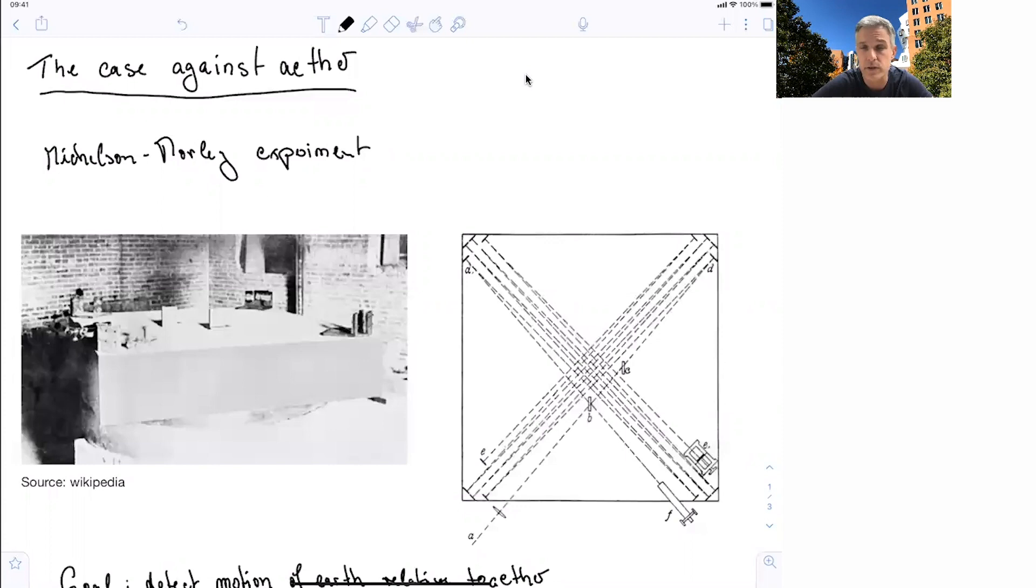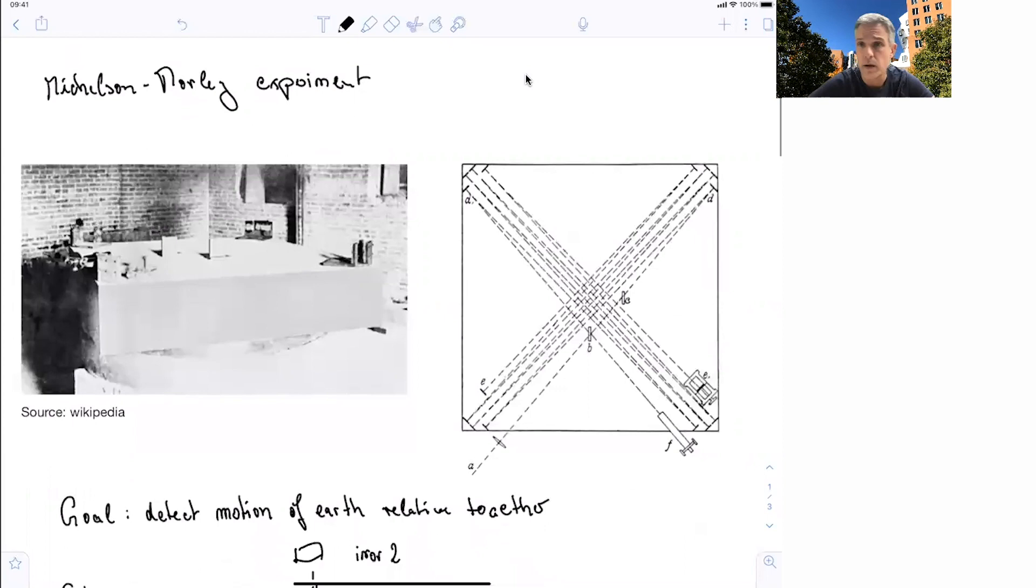Welcome back to 8.20 Special Relativity. In this section and also the next one, we want to make a case against ether. Ether was presumed to be the medium in which light traveled. We do this by studying the Michelson-Morley experiment. Michelson and Morley went out to detect the motion of Earth relative to ether. And by not finding the result, we can conclude that at least in this form, ether doesn't exist.